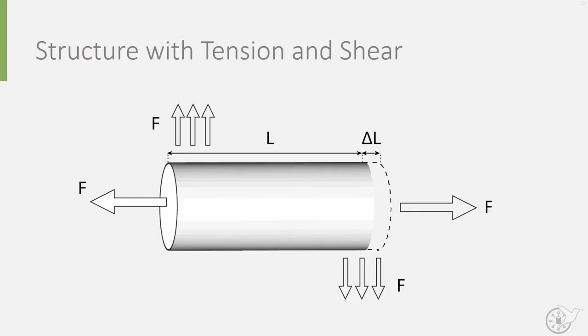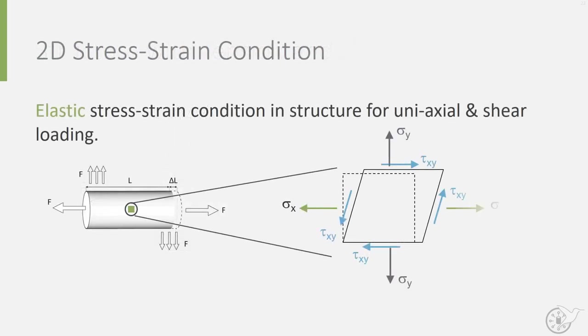So if we consider the case of a two-dimensional element that is loaded in shear and in tension, both shear and normal stresses occur. This is known as a 2D elastic stress strain condition for uniaxial shear deformation and this stress state is very common in aerospace structures.